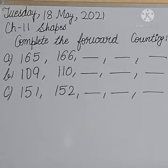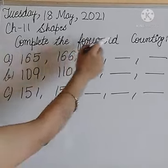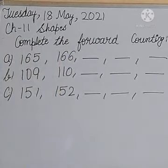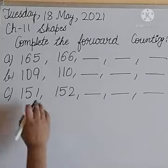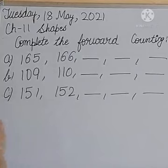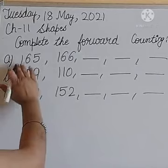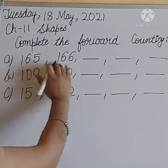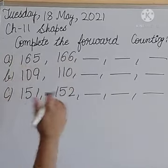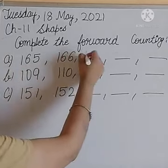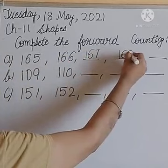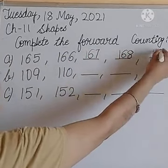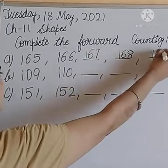Now let us do an exercise to complete the forward counting. How do we do forward counting? What comes after? Forward means when we move from the starting point to the end point. Suppose one hundred sixty-five and one hundred sixty-six — what comes after one hundred sixty-six? One hundred sixty-seven, one hundred sixty-eight, and one hundred sixty-nine.